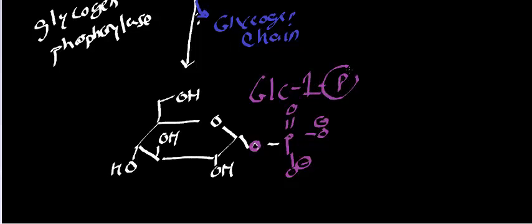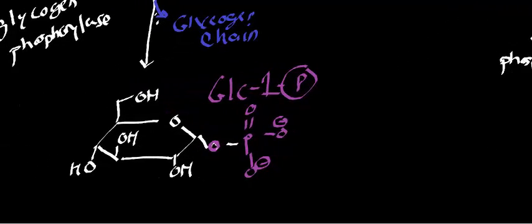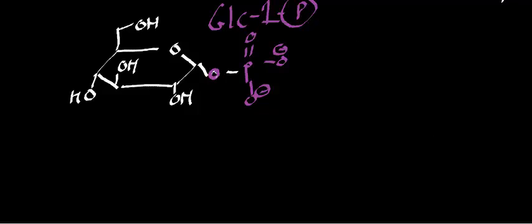Glucose 1-phosphate looks like something that we've seen before, but it's not exactly. It has the phosphate at the wrong position. So it turns out that there's an enzyme that can interconvert between glucose 1-phosphate and glucose 6-phosphate, and that enzyme is called phosphoglucomutase.